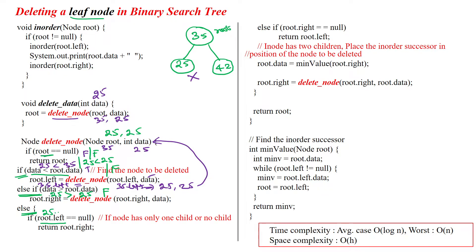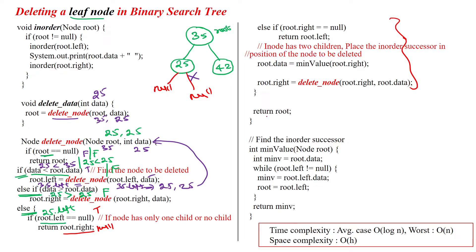So the inner else block executes, where we check root dot left. The current root is 25, and 25 dot left is null, so it is true. If true, we return root dot right. The root dot right is also null here, so this returns null.